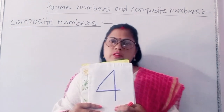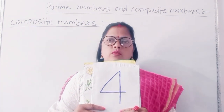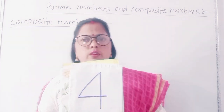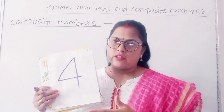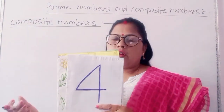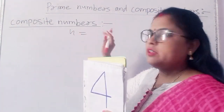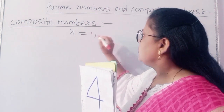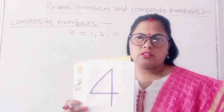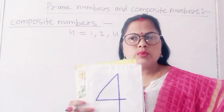Next, composite numbers. I would like to tell you what a composite number is. Composite numbers are numbers which have more than 2 factors. Here I have taken 4. Is 4 composite or not? First I will find the factor of 4. The factor of 4 is 1, 2, and 4. So 4 has 3 factors, which means more than 2 factors. So 4 is a composite number.